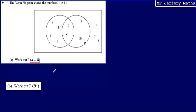So all that I need to do is work out how many numbers are in my Venn diagram, and then work out how many numbers there are in total, and that will give me my probability. So I've got 1, 2, 3, 4, 5, 6, 7, 8 numbers that are contained within the Venn diagram. I'm told it's the numbers 1 to 11, so that is 8 over 11 for part A.